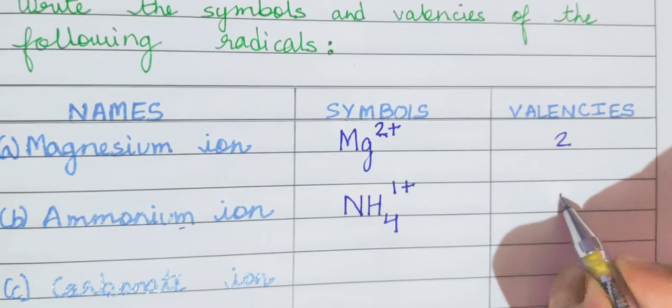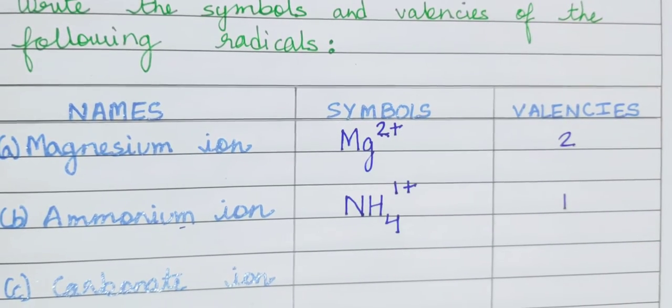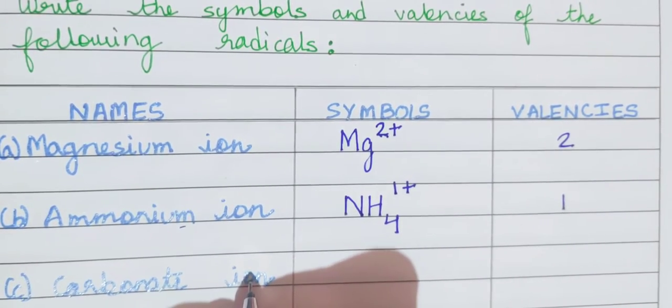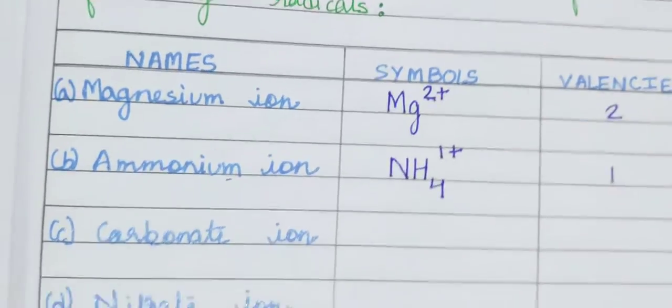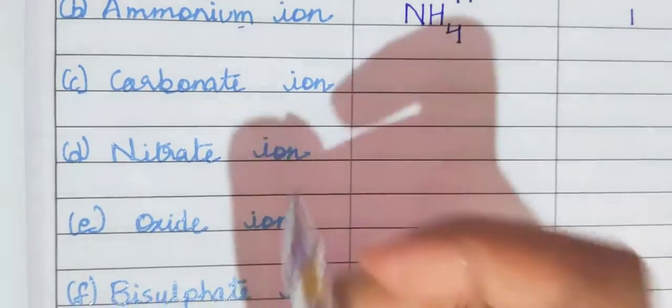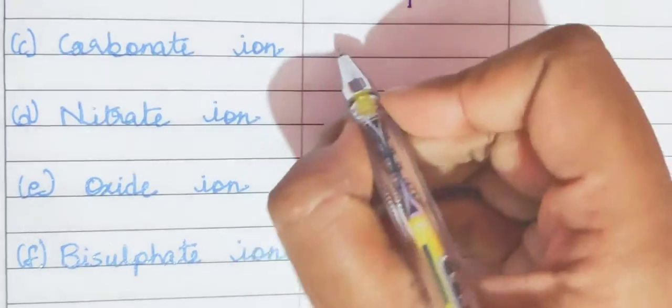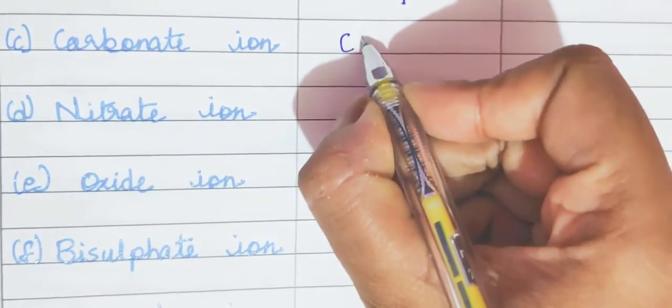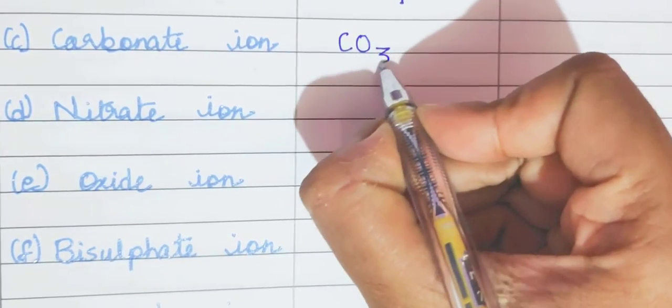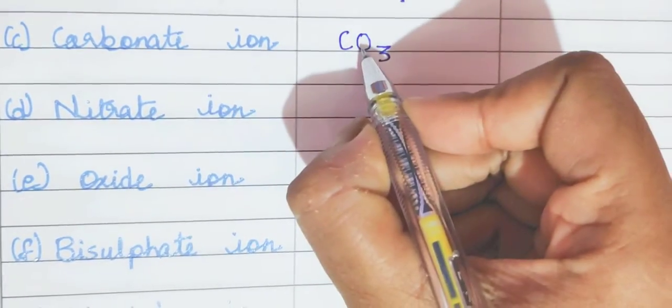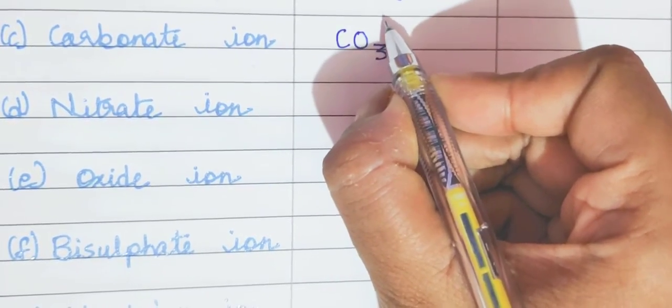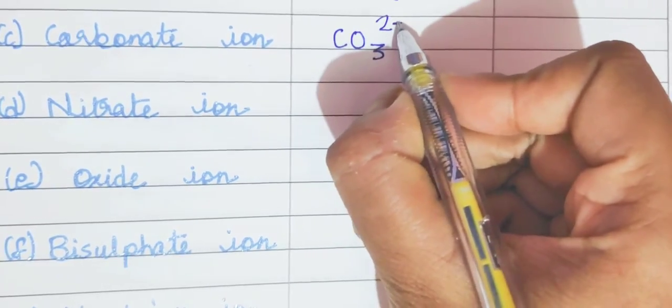So here what is the valency? It is 1. Next comes carbonate ion. Now carbonate ion is also a radical. So CO3, this is the formula. And what is the valency? It is 2 minus.